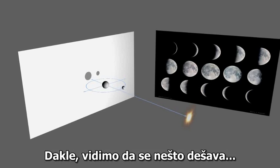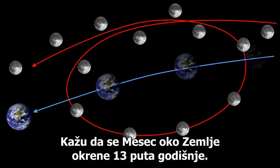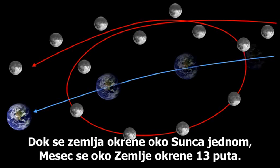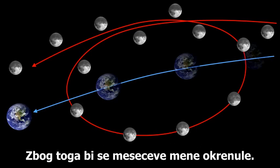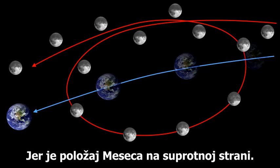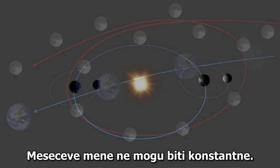So we see something is happening. We are told that the moon orbits the earth 13 times every year. So as the earth orbits around the sun, on one orbit, the moon has orbited around the earth 13 times. Therefore the paths would actually overlap. The phases cannot then be constant, because the position of the moon would overlap.